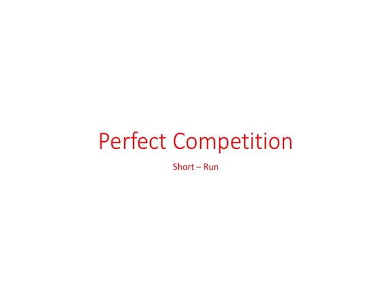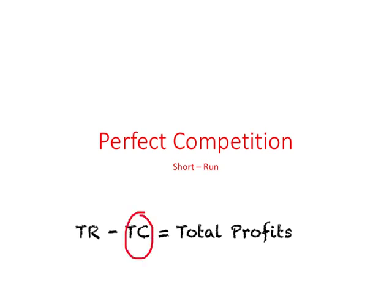We have been trying to understand the theory of business. Firms want to maximize total profits, which is the difference between total revenue (TR) and total cost. To maximize total profits, firms must keep costs at the lowest possible level and maximize total revenue. We have examined the total cost side in great detail in both the short run and the long run, and now we start looking at the revenue stream for the firm.